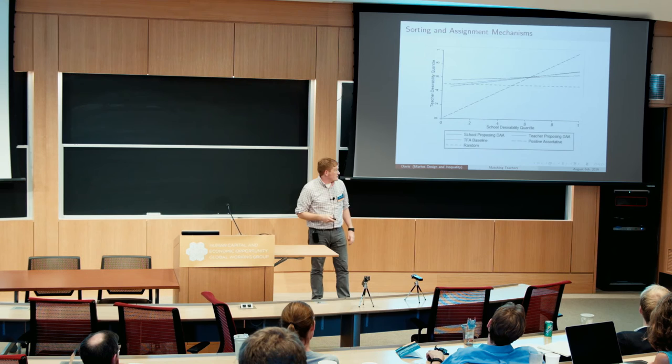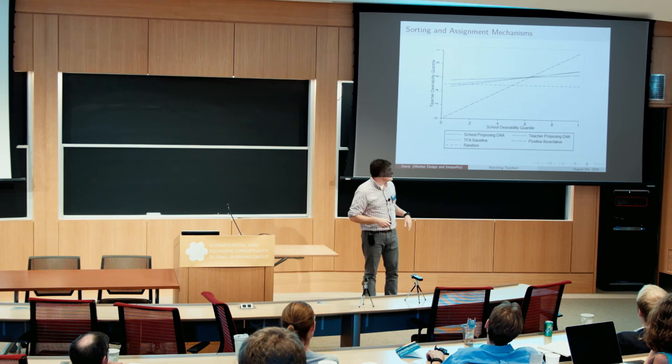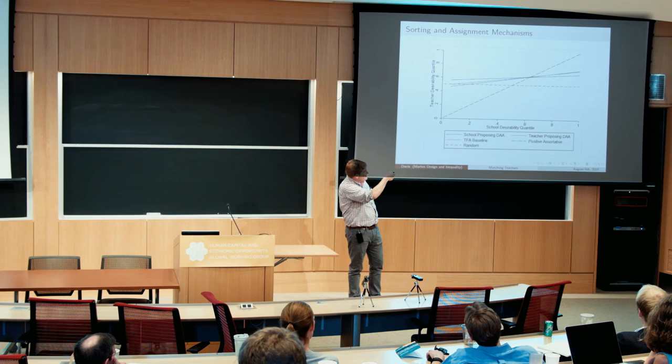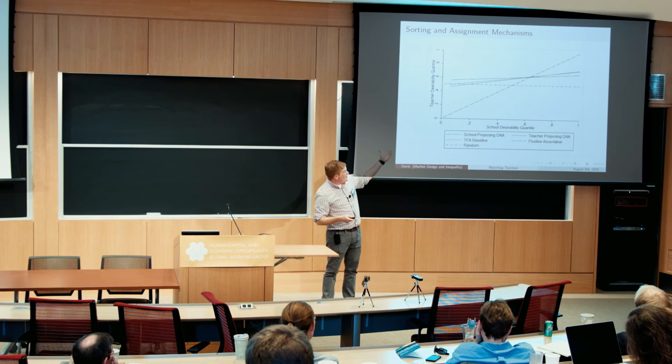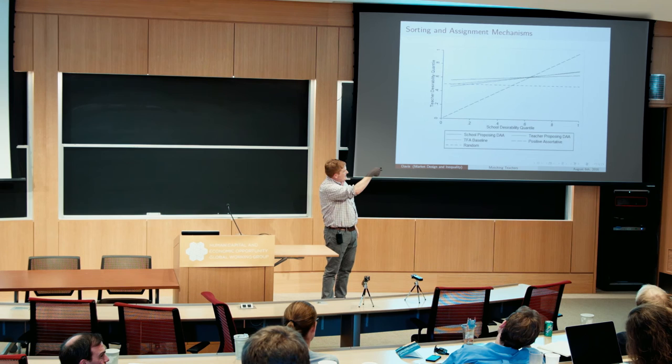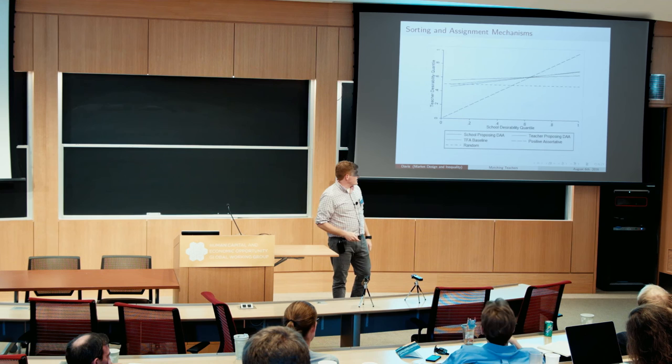Looking at the change in teachers' ranks between the old and new mechanisms, teachers were generally getting more preferred matches. One thing that was nice about this design is that we sacrificed stability in order to get strategy-proof preference reports from both sides — teachers weren't allowed to truncate their preference lists, so they had to rank all schools. I'm able to simulate different mechanisms and find that both forms of deferred acceptance have about the same level of sorting.